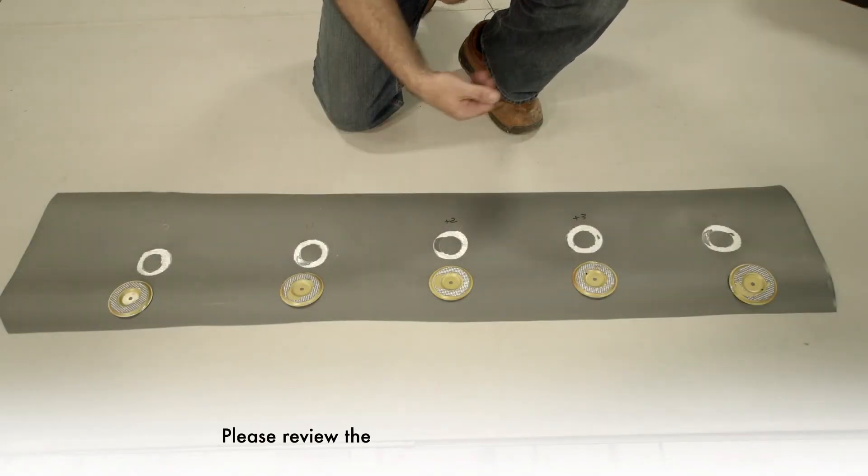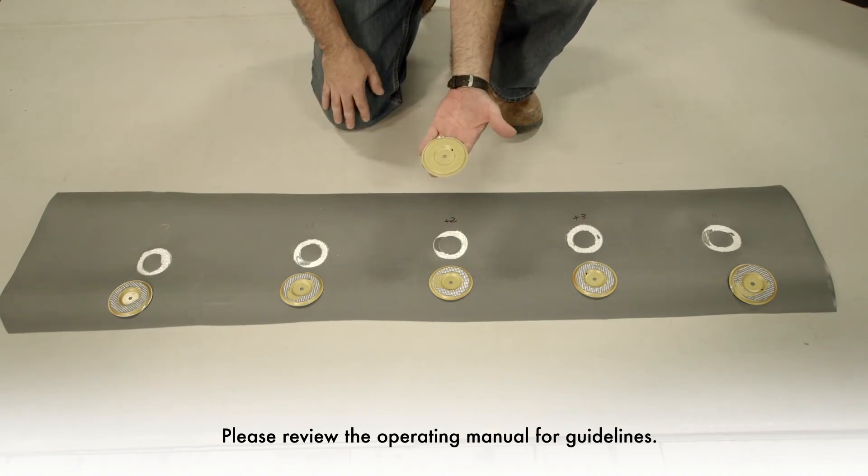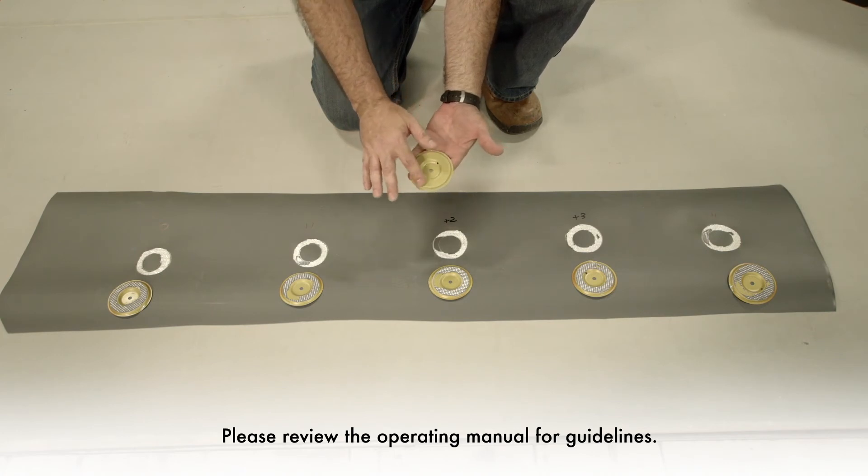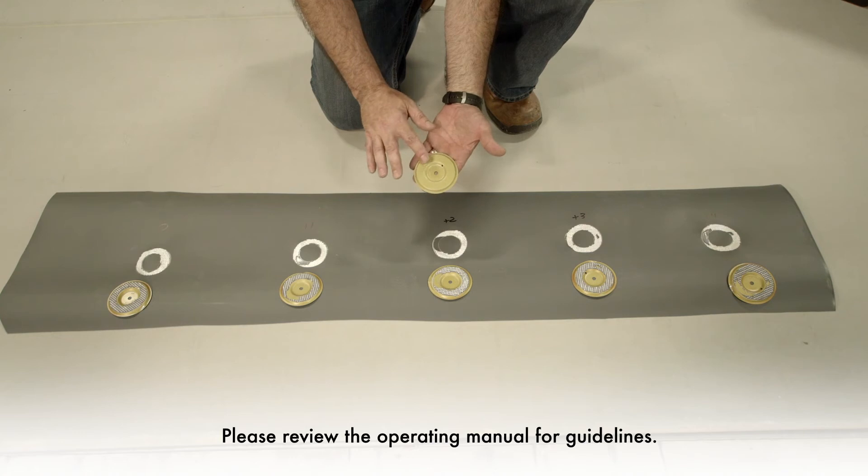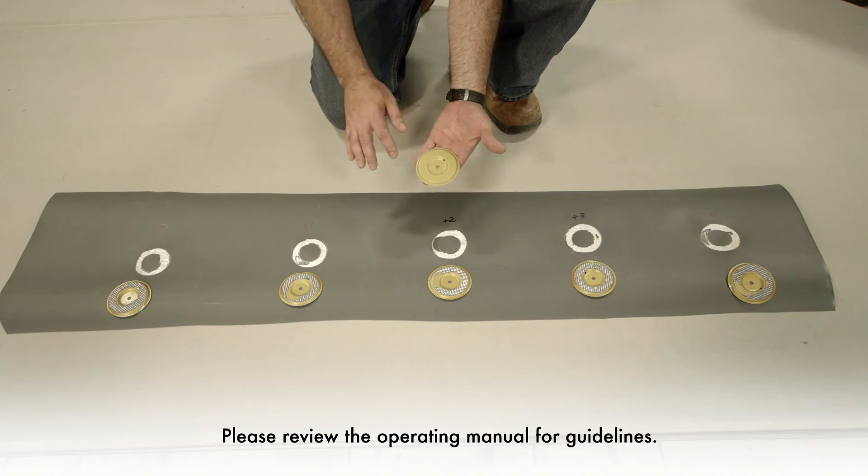All right, now that we have each one of our five plates pulled with a pair of channel locks, it's important to do a visual inspection. Let's take a look at the anatomy of the plate first of all. This raised circular surface here, we call it the donut, this is the bonding surface of the plate. This is where we want to see the back of our roofing membrane stuck entirely to this surface in a 360 degree circle.